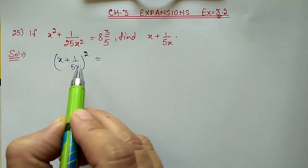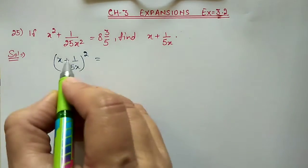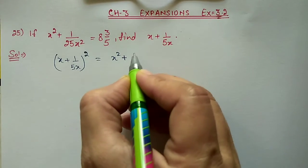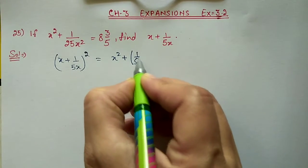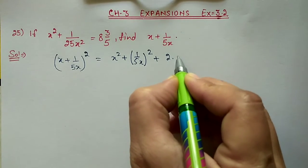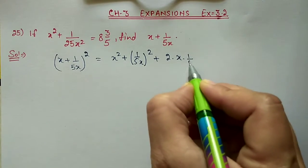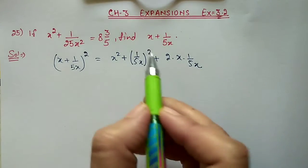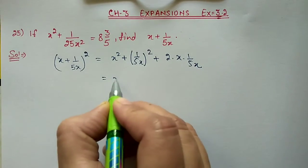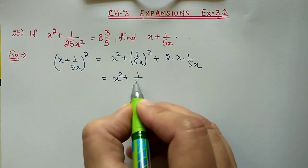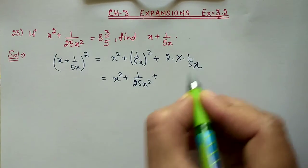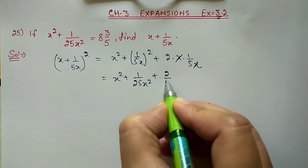We will use the (a + b)² formula: a² means x², plus b² means (1/5x)², then plus 2ab — that is 2 × x × 1/5x. Now substituting, this becomes x² + 1/25x², and the x terms cancel, giving 2/5.